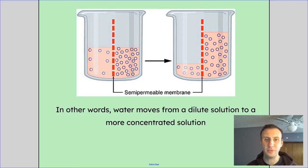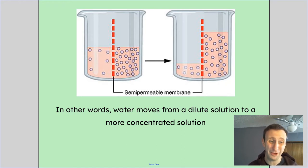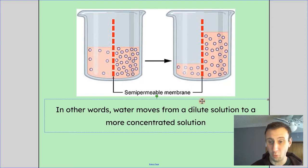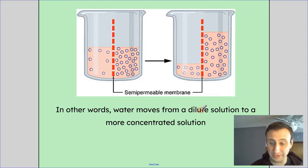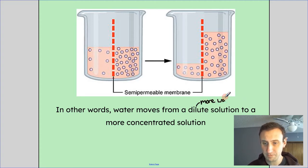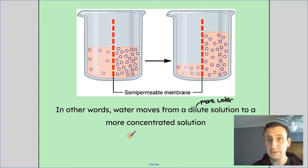It's important to realize I'm talking about the solute — the thing that's dissolved in the water. When I talk about a dilute solution, what I'm actually saying is that for a dilute solution, there is more water. Because dilute means I have less solute, so therefore I must have more of the water solvent. So, from a more water solution to a less water, or more concentrated, solution.